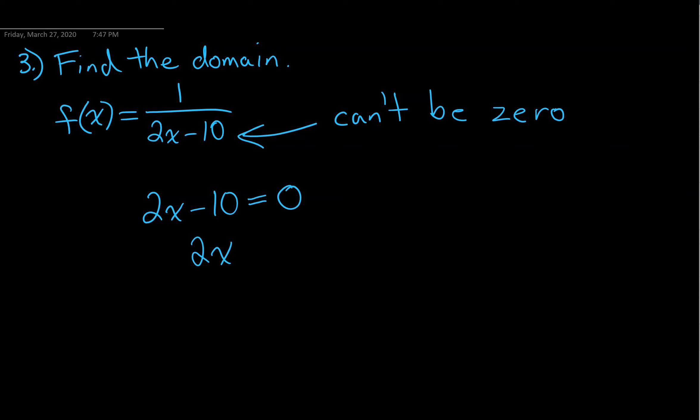Here we can add ten to both sides. If we divide by two, the offending x value, the x value that we can't have in our domain is five. So we got to leave that out.